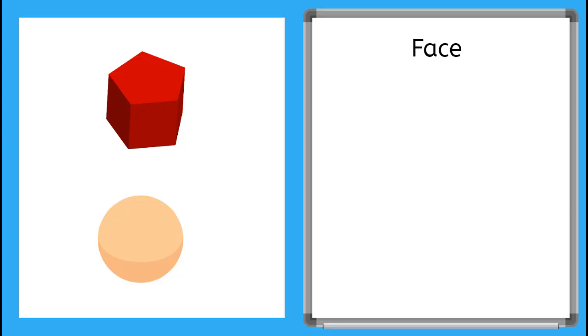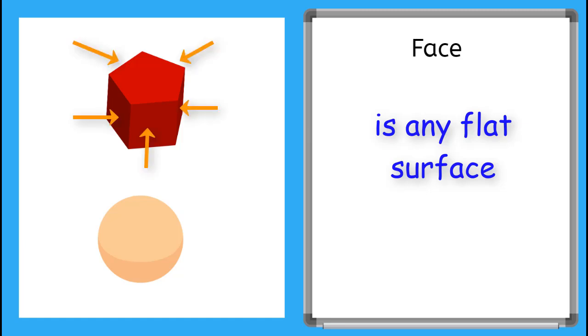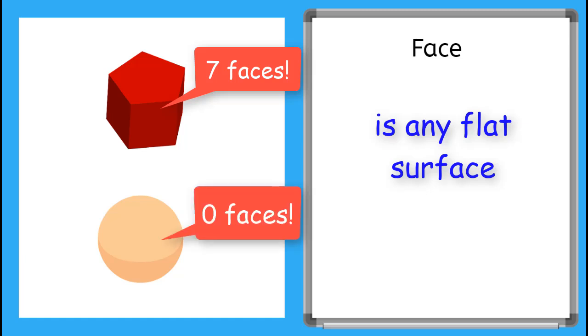The face on a solid figure is any flat surface. A solid figure can have more than one like this pentagonal prism. It has five sides and two bases. So altogether, seven faces. But this sphere has no flat surfaces. So it has zero faces.